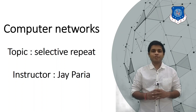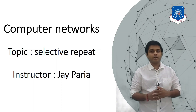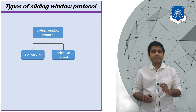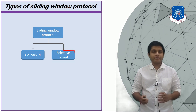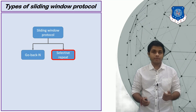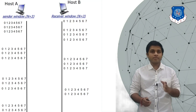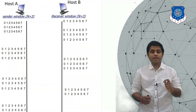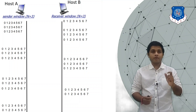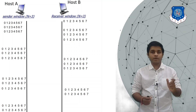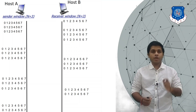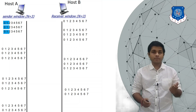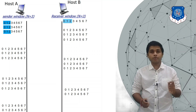Hi everyone, this is Jay, your instructor for computer networks. In this session we will discuss the second type of sliding window protocol, which is Selective Repeat. There is one sender A and receiver B. In the Selective Repeat protocol, the window of the sender will be the same as the window of the receiver. The size of the sender's window is 3, so the receiver's window will also be 3.